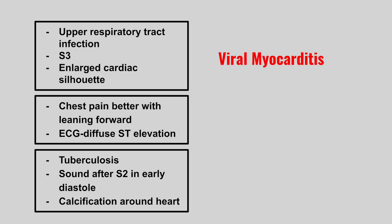The next one is someone who presents with chest pain that gets better with leaning forward, and the ECG shows diffuse ST elevations. This is pericarditis.